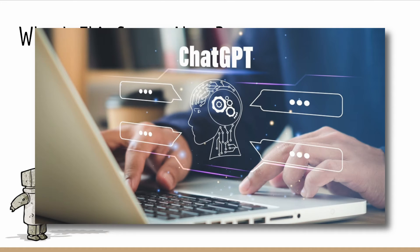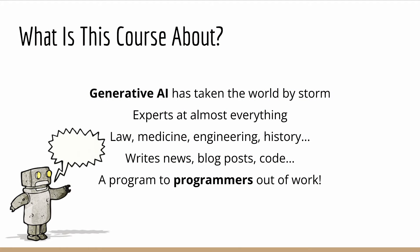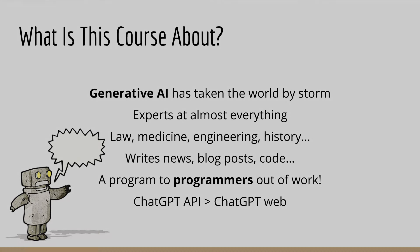Now, everybody has access to ChatGPT and other large language models through the web. But one of the major applications of ChatGPT is to use it to help automate tasks. That is, instead of having to paste your instructions into ChatGPT yourself and then copy the response and do something with it manually, you can use ChatGPT as part of your own computer programs to get things done without lifting a finger. This requires API access.